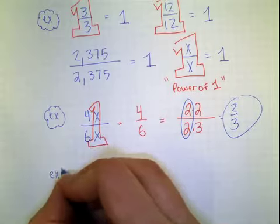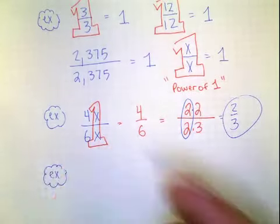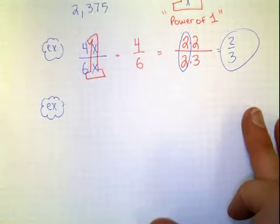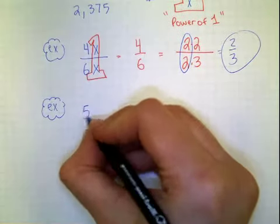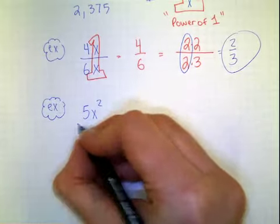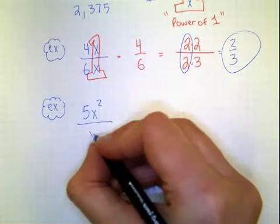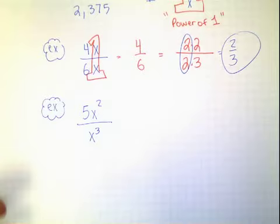So we're going to try some more algebra ones. Ones with x's and y's and different variables in it. And we're going to be looking for the power of 1. And so we're going to do some examples. We're going to do 5x squared over x to the third power. I'm going to start making them harder.